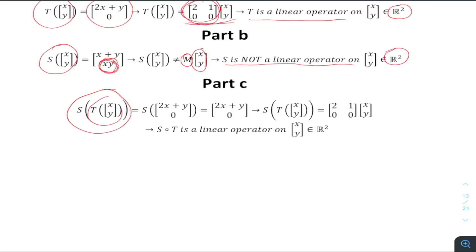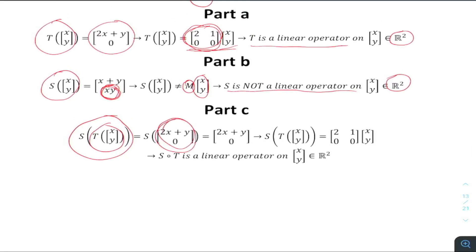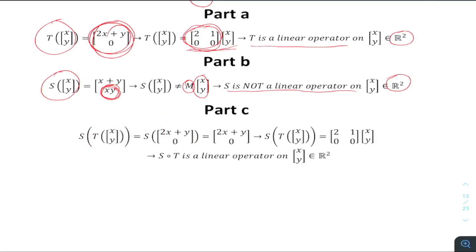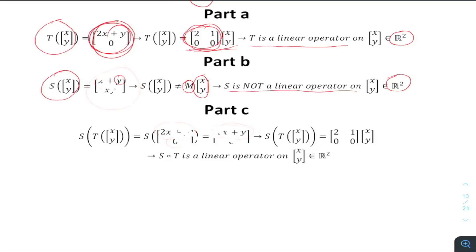For Part C, we will first apply the T operator to the vector (x, y). Using the definition of T, we compute the result: the first component is the first plus the second, and the second component is zero.